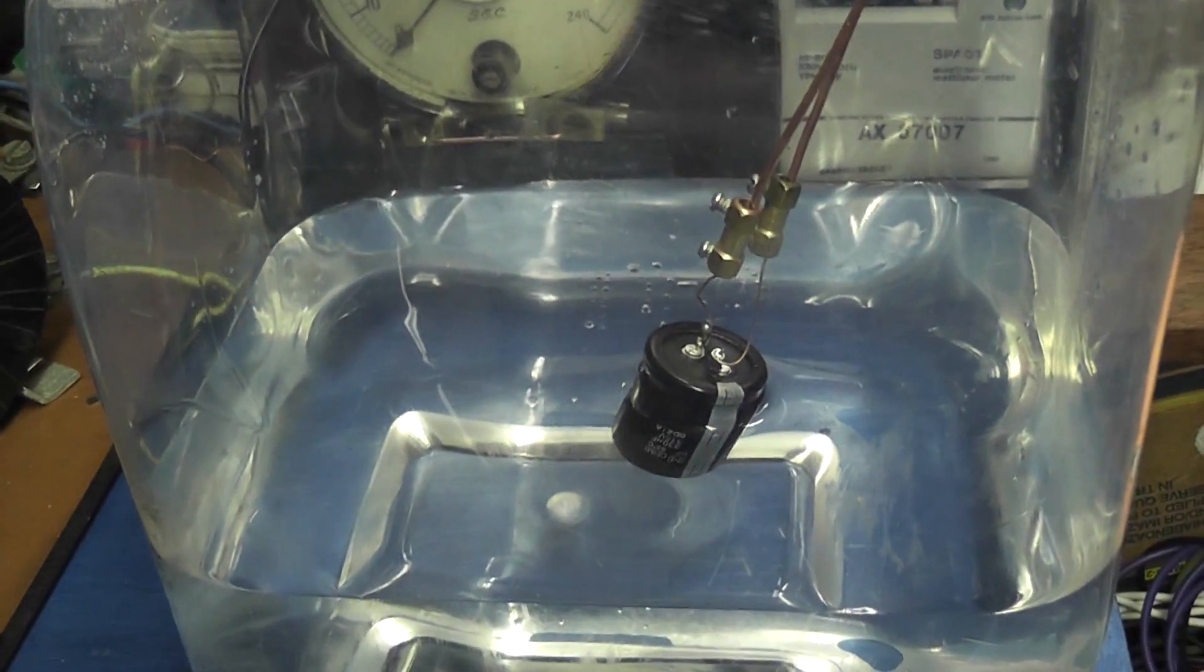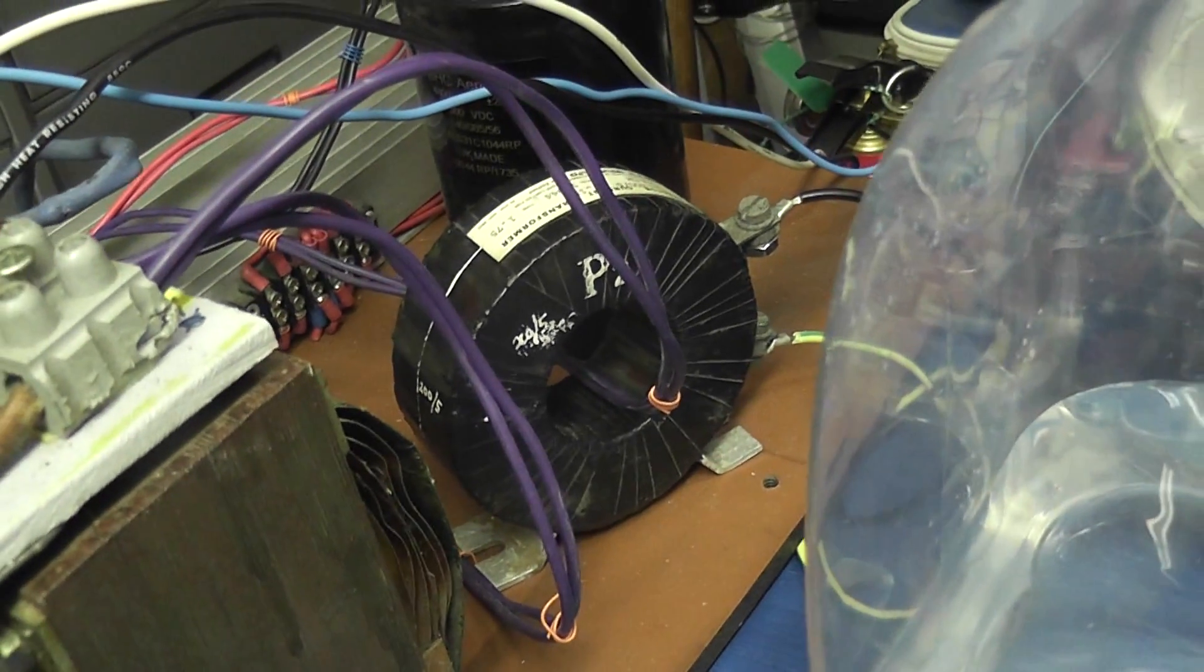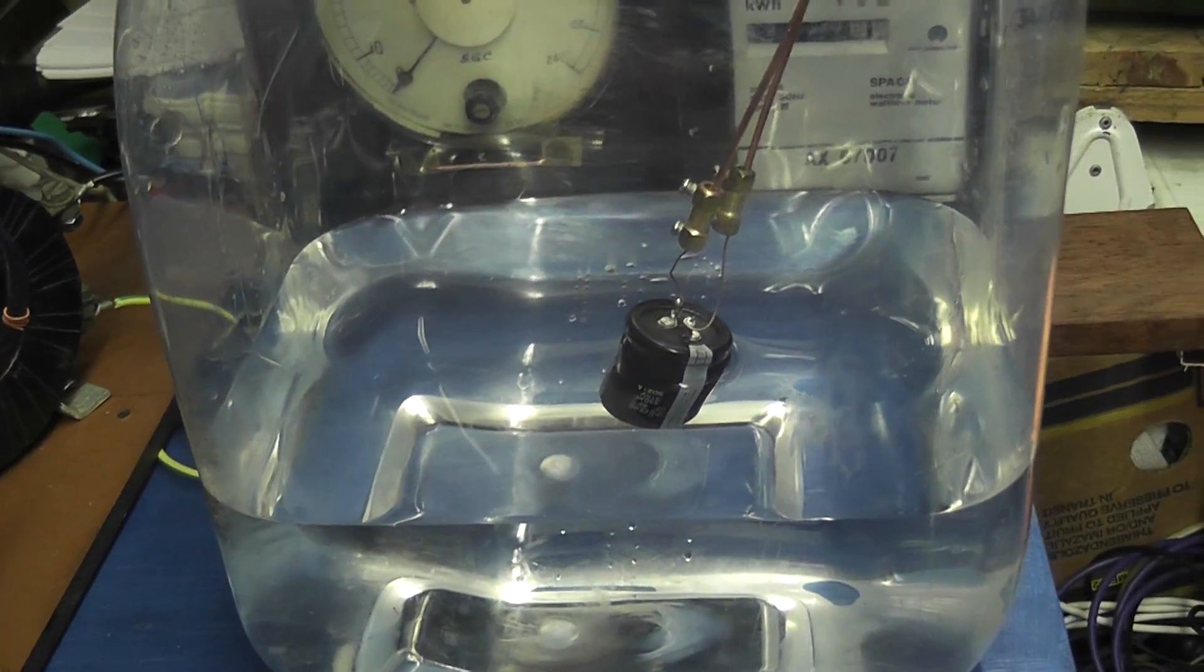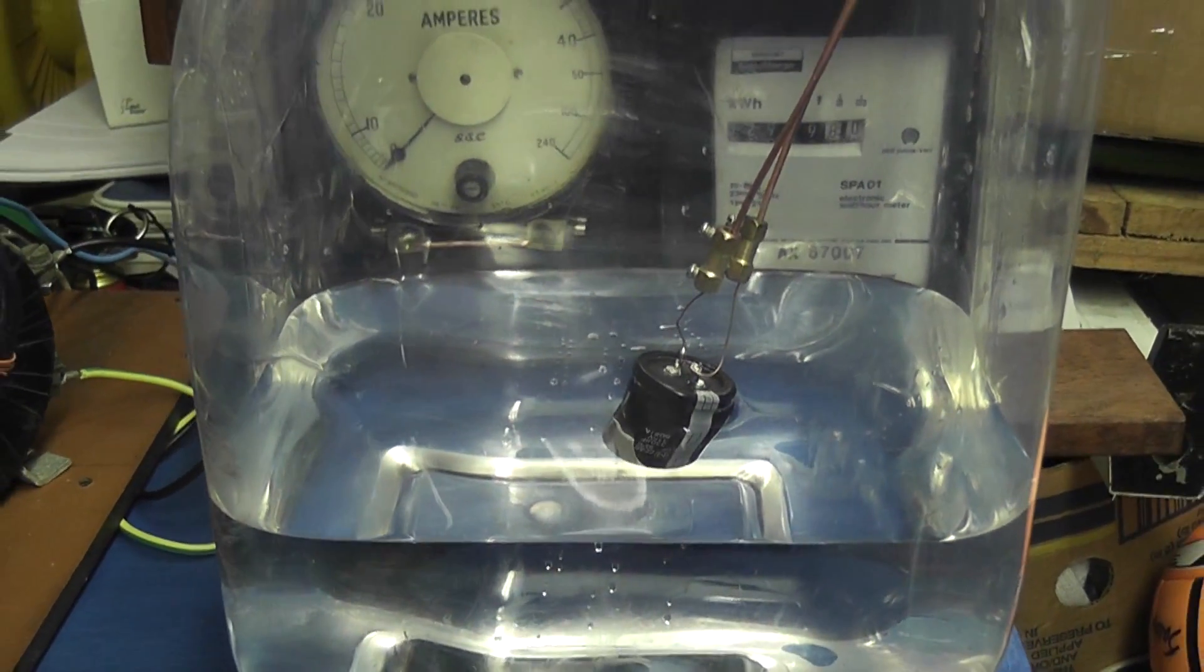And then into a capacitor, a big buffer capacitor, and into the test cell here. As well I got a CT current transformer measuring power for the meter, and a kilowatt hour meter which is connected to the incoming supply.